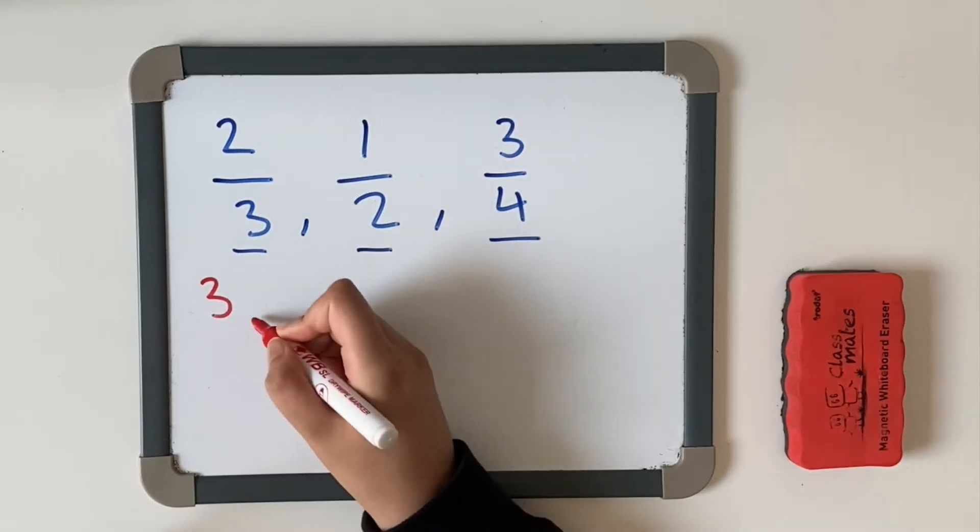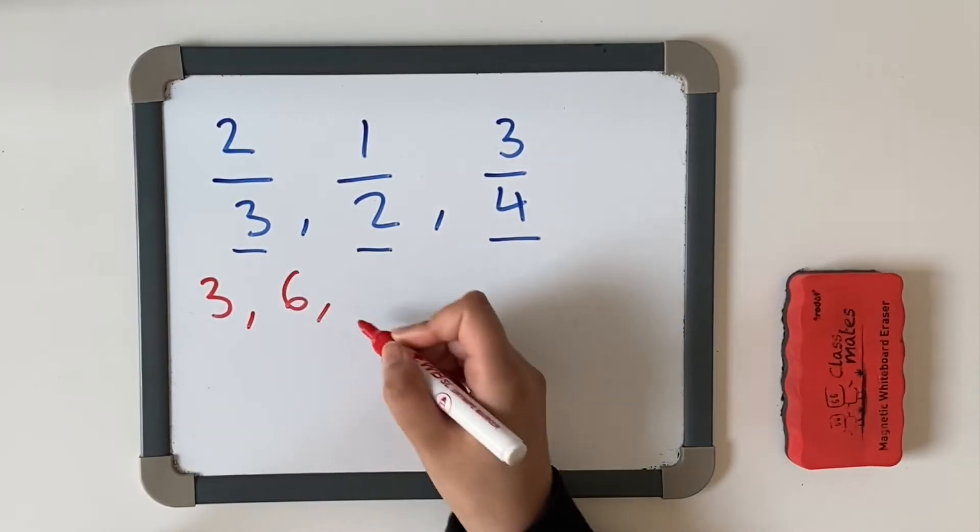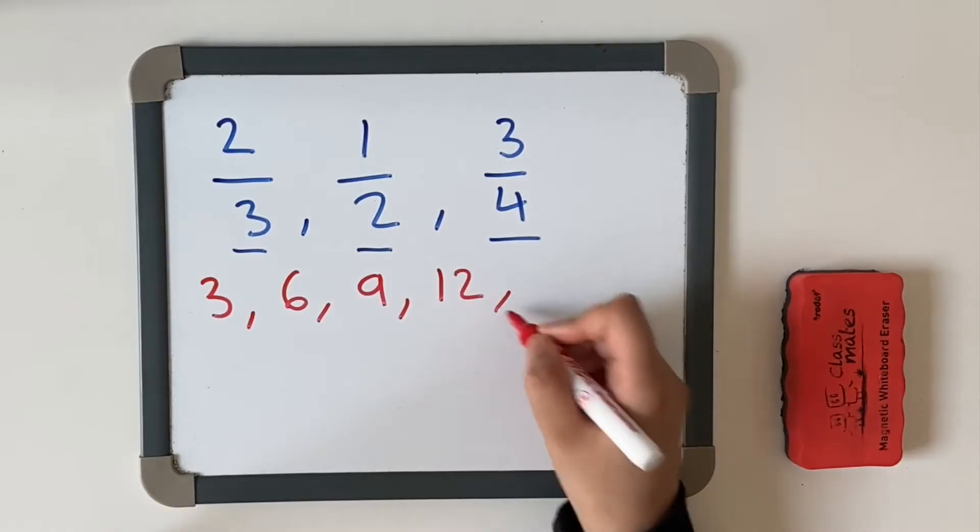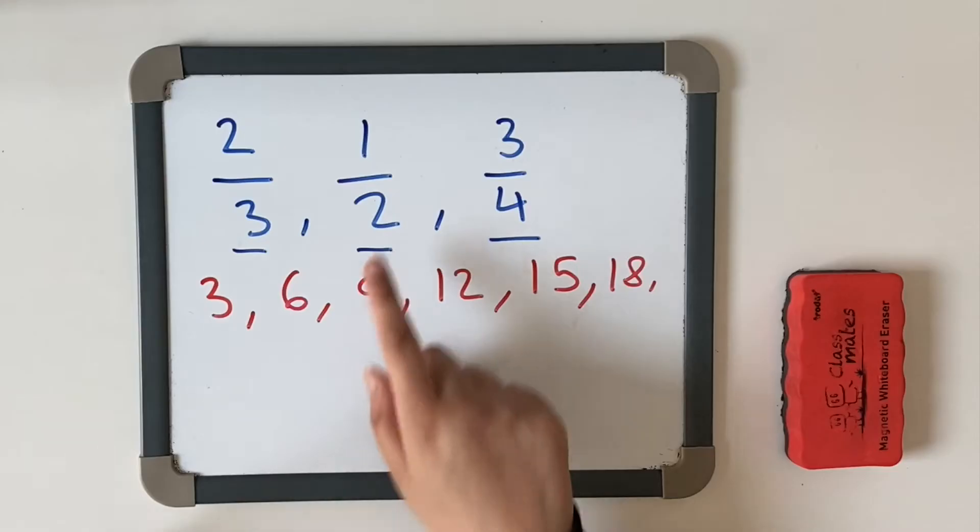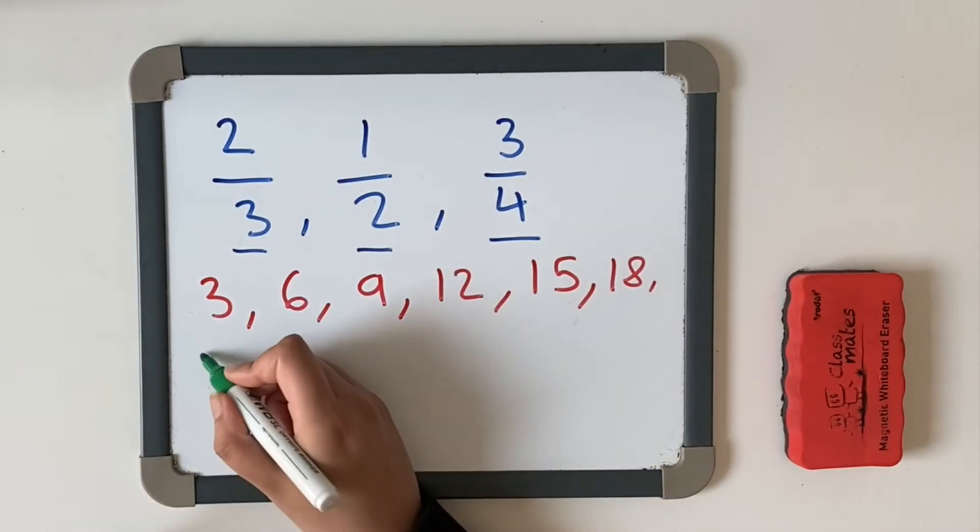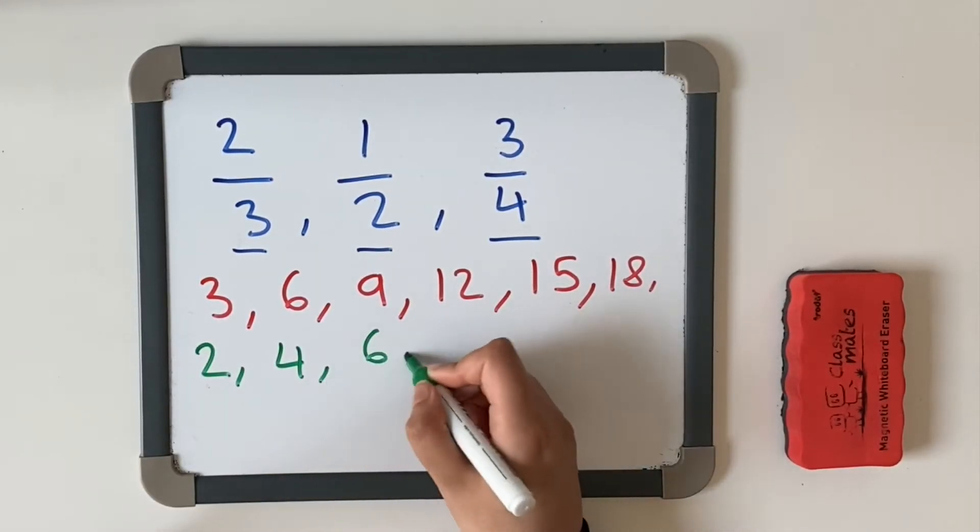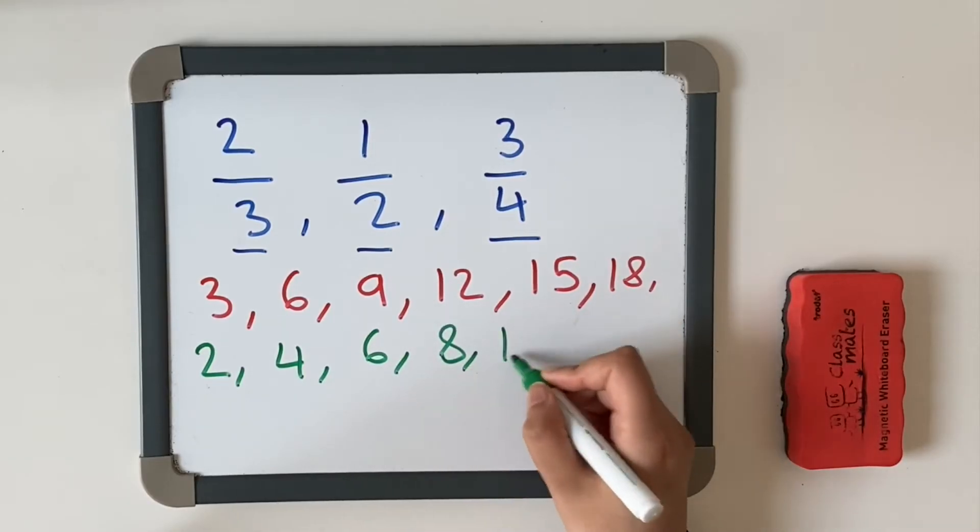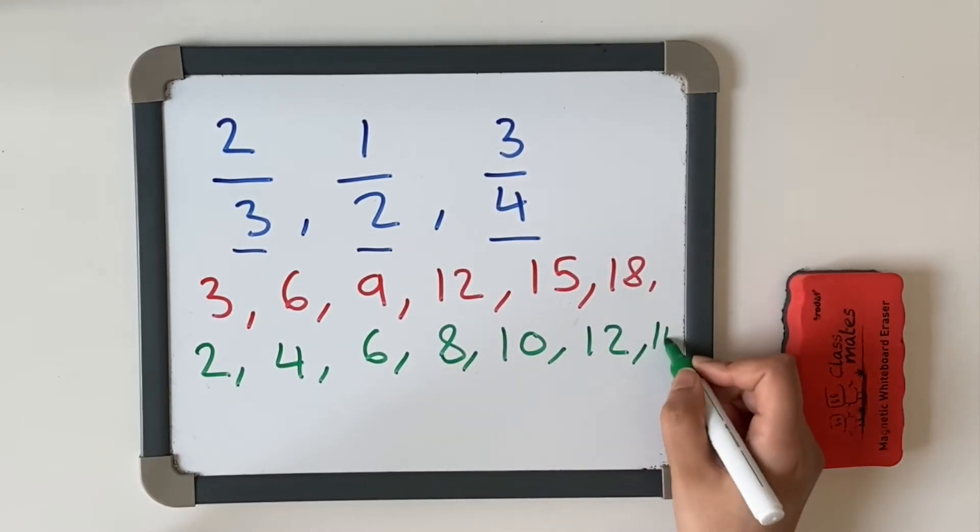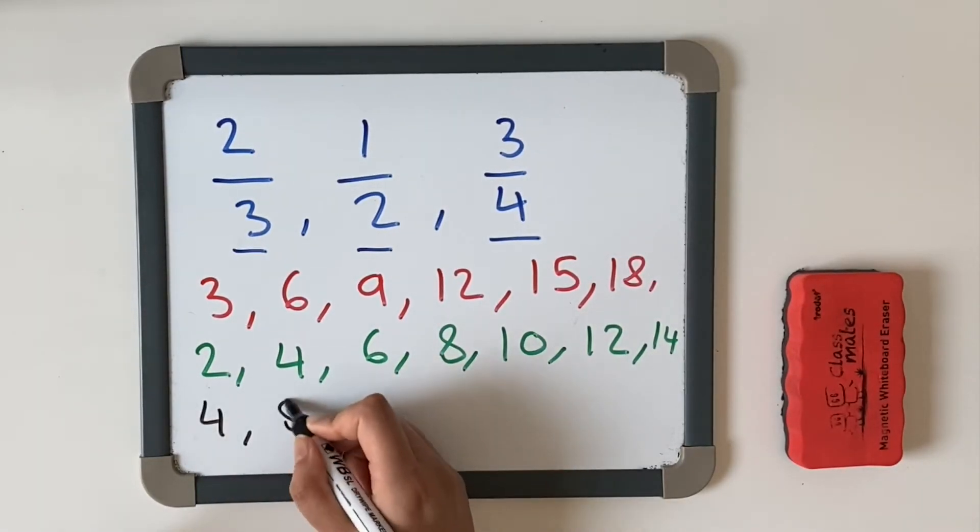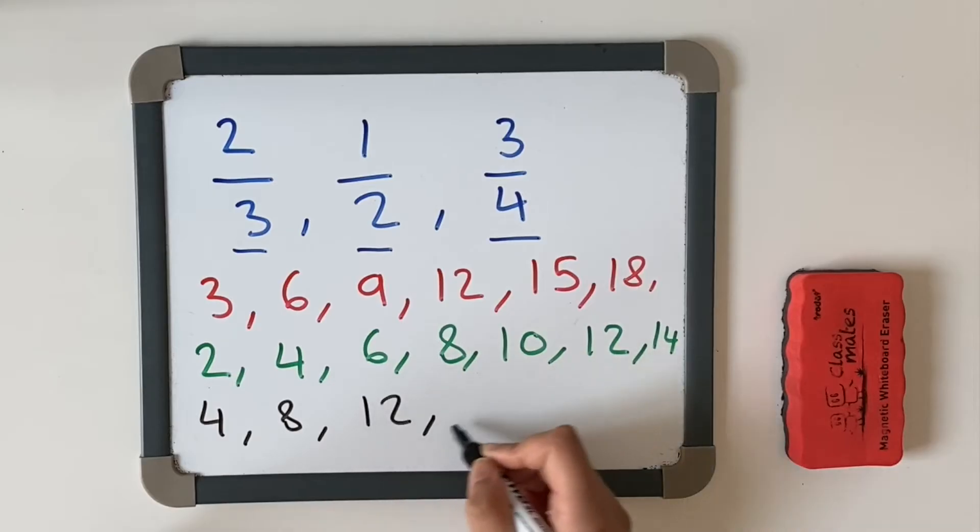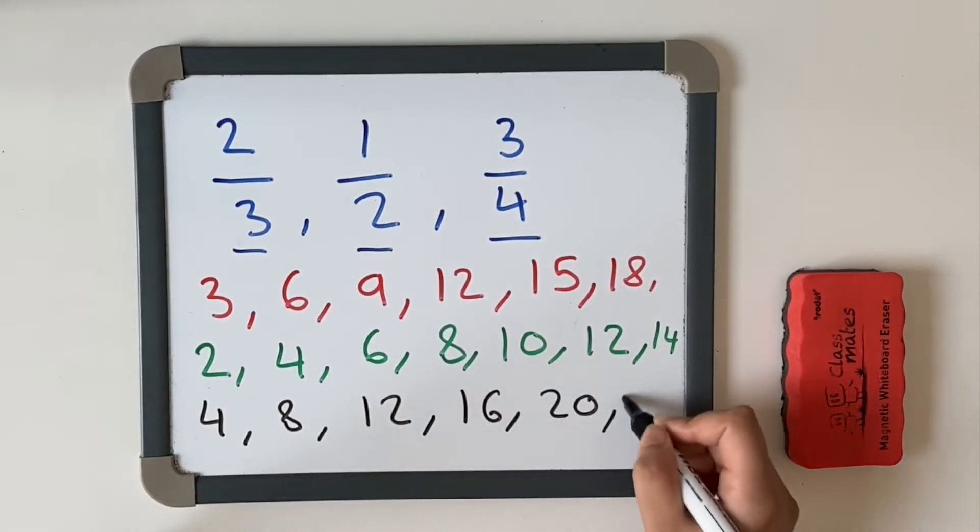We have three, six, nine, 12, 15, 18. The next one is a half, so we're going to go up in twos: two, four, six, eight, 10, 12, 14. And our final one is multiples of four. We're going to count up in fours: four, eight, 12, 16, 20, 24.